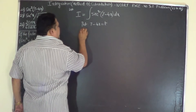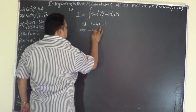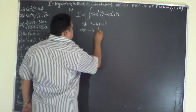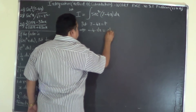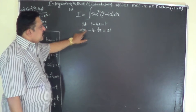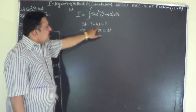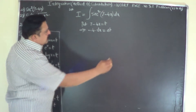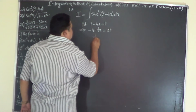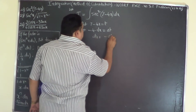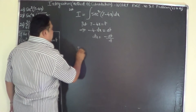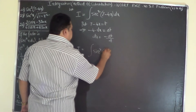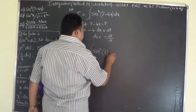Put 7 - 4x = t. This implies -4 dx = dt, because differentiating 7 gives 0, and the differential coefficient of x is 1. Differentiating t with respect to x gives dt/dx, so dx = -dt/4. Therefore I becomes the integral of sec²(t) because 7 - 4x is t, and dx is replaced by -dt/4.